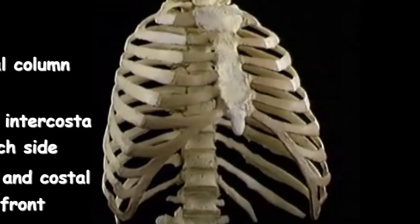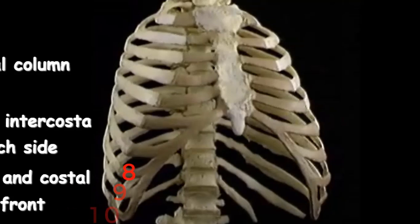The ribs can be divided into the following according to their attachment to the sternum. The upper seven are called the true ribs because they have costal cartilages that articulate with the sternum, while the eighth, ninth, and tenth ribs are called false ribs because their costal cartilages do not reach the sternum and articulate with the costal cartilage above. The last two ribs are called the floating ribs.